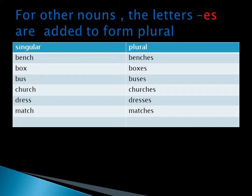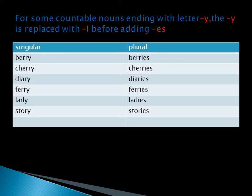We also have some countable nouns ending with the letter Y. For these nouns, the Y is replaced with the letter E before adding ES. For example: berry becomes berries, cherry becomes cherries, diary becomes diaries, fairy becomes fairies, lady becomes ladies.